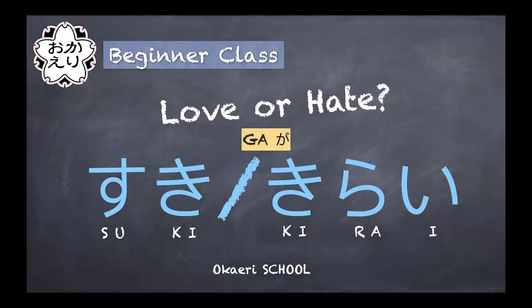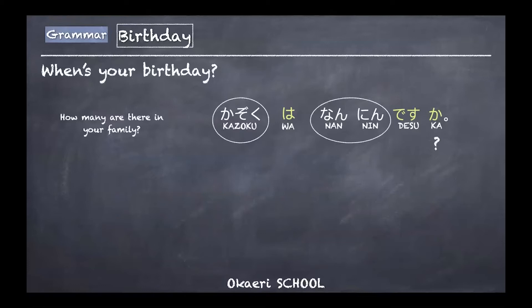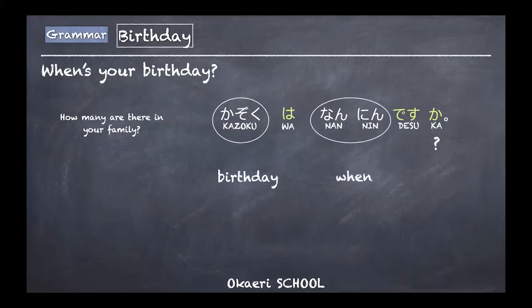We will need to learn the particle ga. Last time — which was a bit long ago — we talked about birthdays and dates. We started with a basic grammar structure: a topic followed by a descriptor and ka as a question indicator. We used this for 'when's your birthday?' and 'how many people are in your family?' — the same structure, just replacing words.